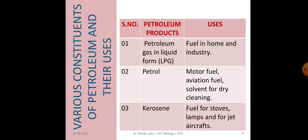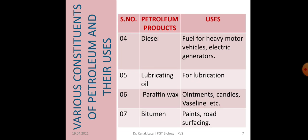Third is kerosene, which is used as fuel for stoves, lamps, and also for jet aircraft. Next is diesel, which is used as fuel for heavy motor vehicles and also for electric generators. Next is lubricating oil, which is used for lubrication to reduce friction. Another one is paraffin wax, which is used in making ointments, candles, and Vaseline. Next is bitumen, which is used as paint or in road surfacing.